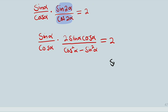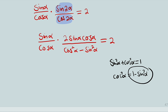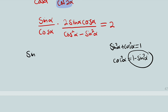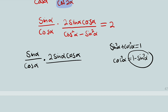Now we have two double angles. Remember we can simplify: sin(alpha)/cos(alpha) stays as is. For sin(2 alpha), it equals 2 sin(alpha)cos(alpha) — refer to the double angle identity. For cos(2 alpha), it equals cos²(alpha) − sin²(alpha). Also recall that sin²(alpha) + cos²(alpha) = 1, so cos²(alpha) = 1 − sin²(alpha). Replacing cos²(alpha), the denominator becomes 1 − 2 sin²(alpha), and the whole expression equals 2.